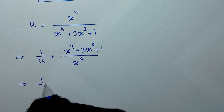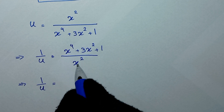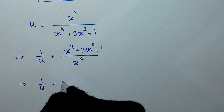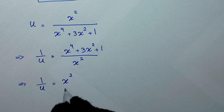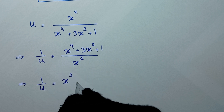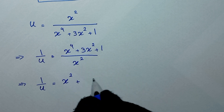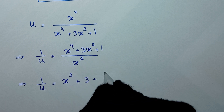Splitting the terms: x to the power of 4 divided by x squared is x squared, plus 3x squared over x squared is 3, plus 1 over x squared.